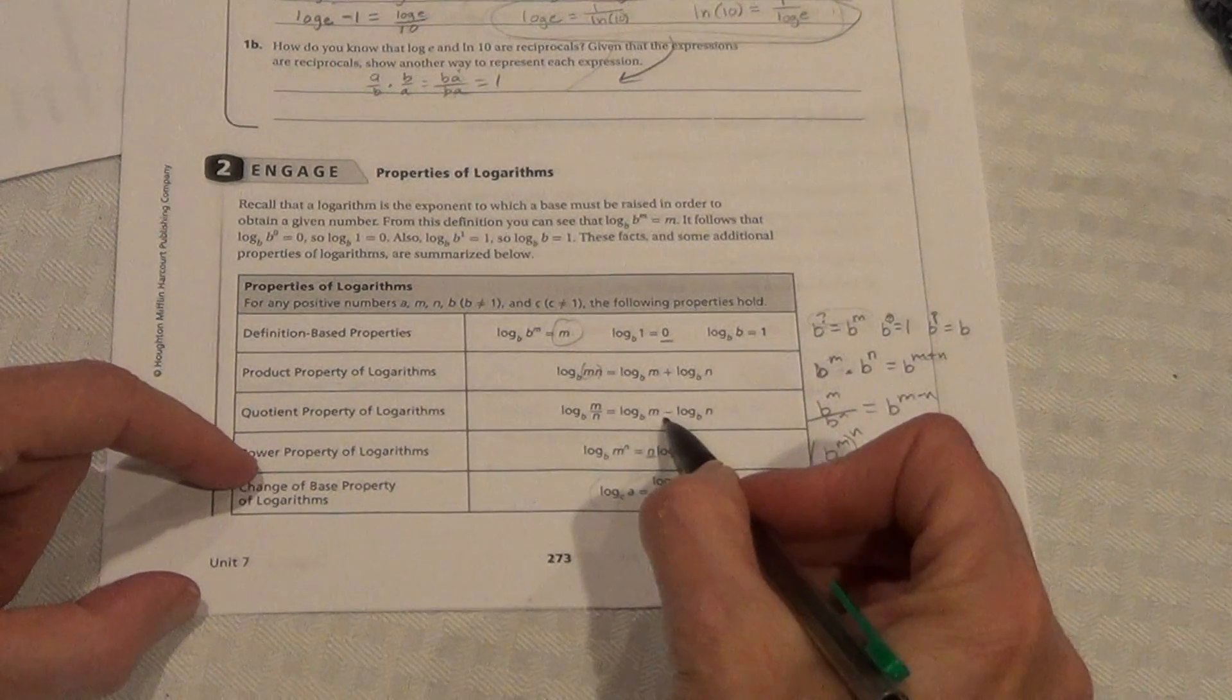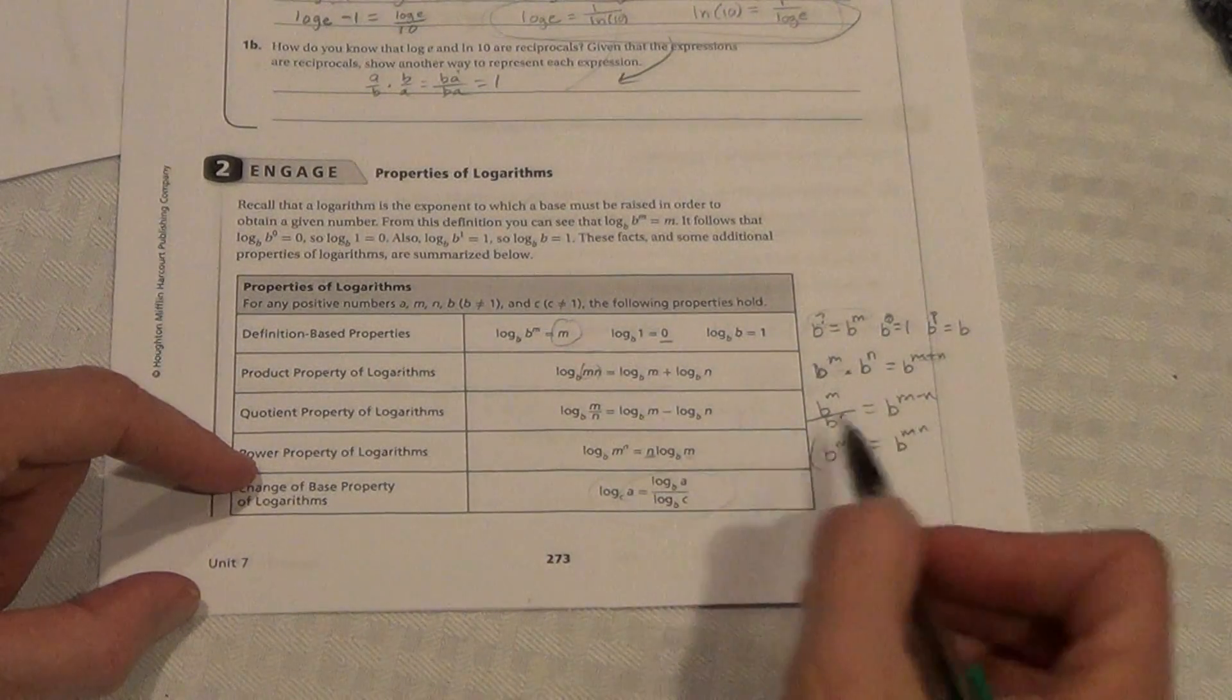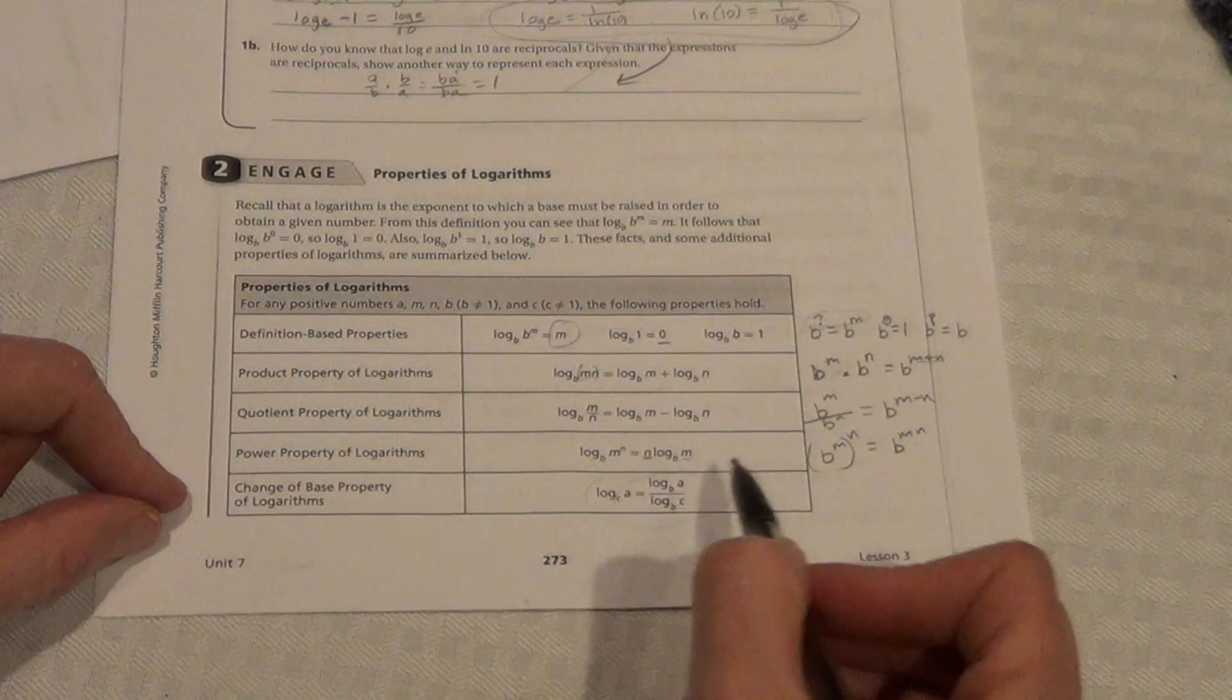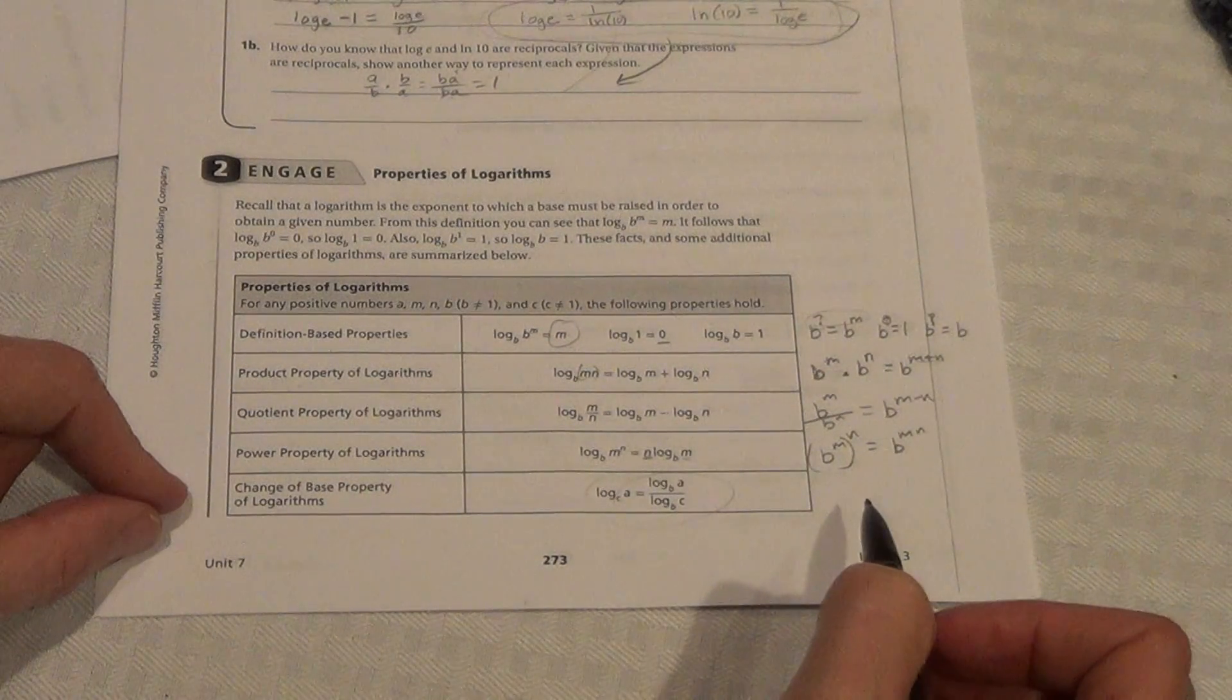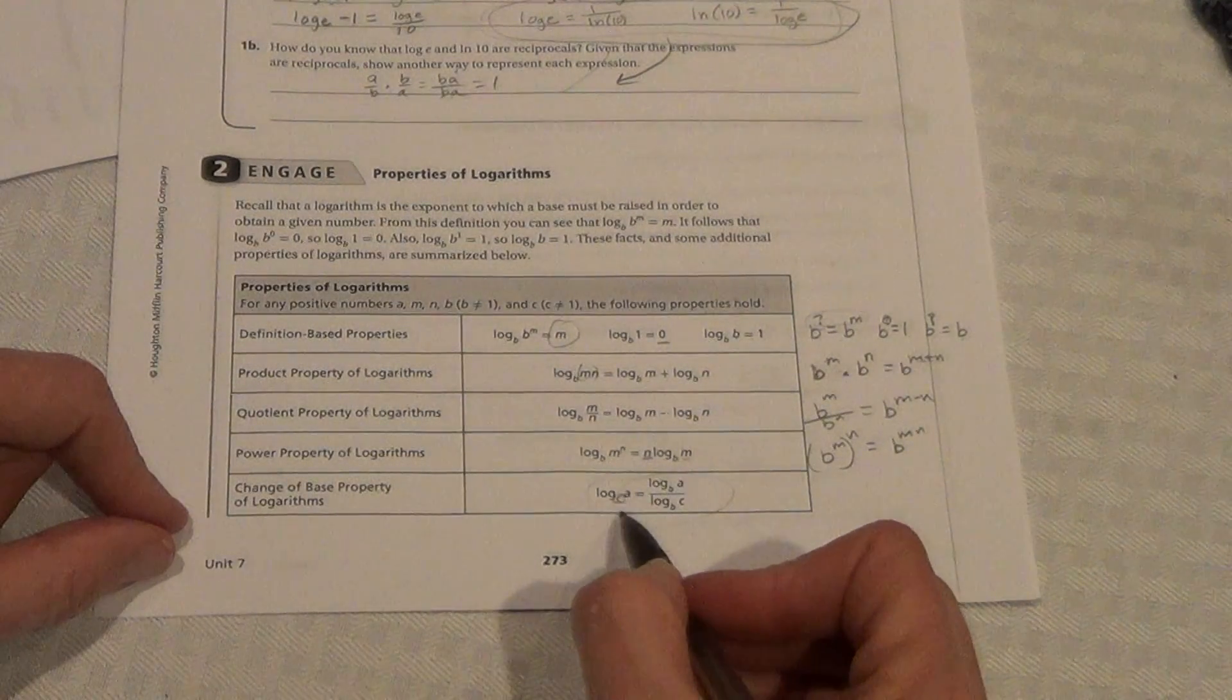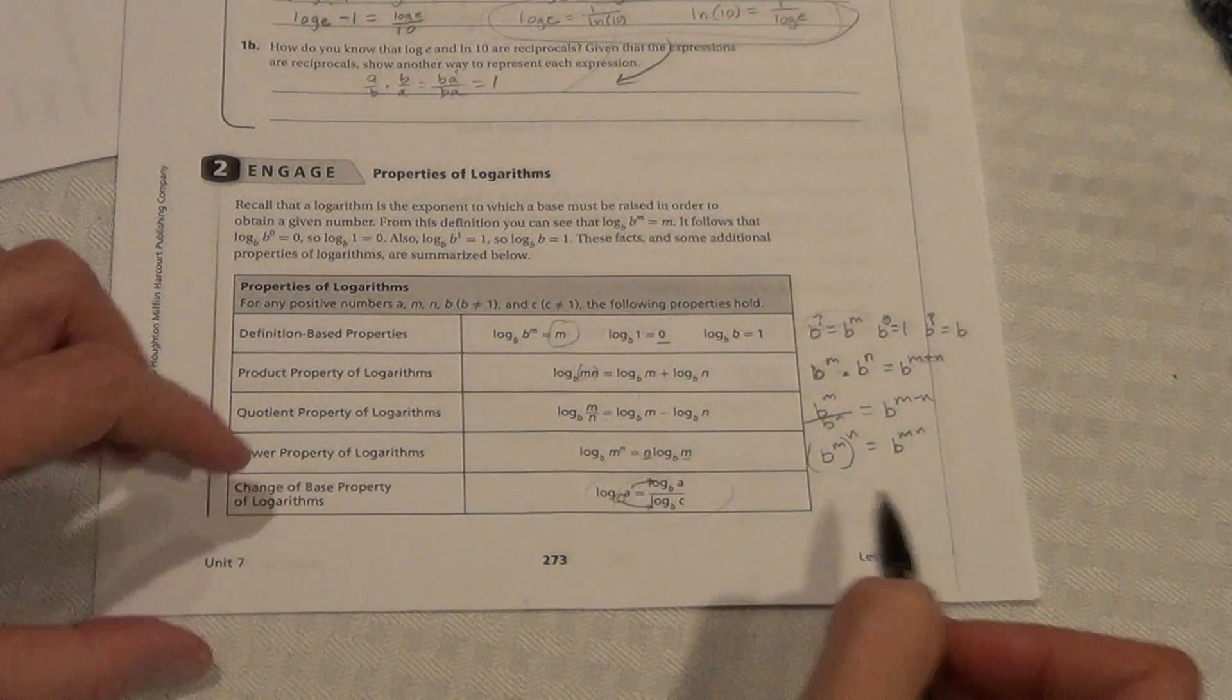When we divide, we would subtract. b to the m over b to the n is equal to b to the m minus n. So, this should kind of be correlating to you with exponents. Log base b to the m to the n would be the same as n times log b m. And to change base, log c of a, I always just look at this one is down below, so it goes down here, and this one is up here. This is really useful with calculators, so we'll show you the reason for changing base here in a little bit.